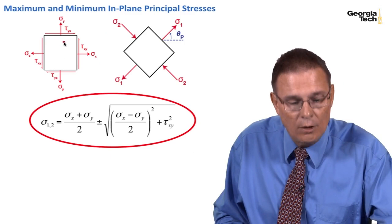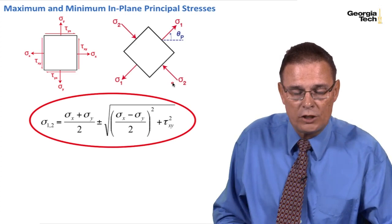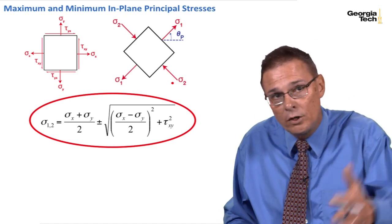So at some angle theta we rotate our block and at that angle theta we end up with what's called principal stresses. And I've shown them they can be both positive, they could be both negative, one could be positive, one could be negative.